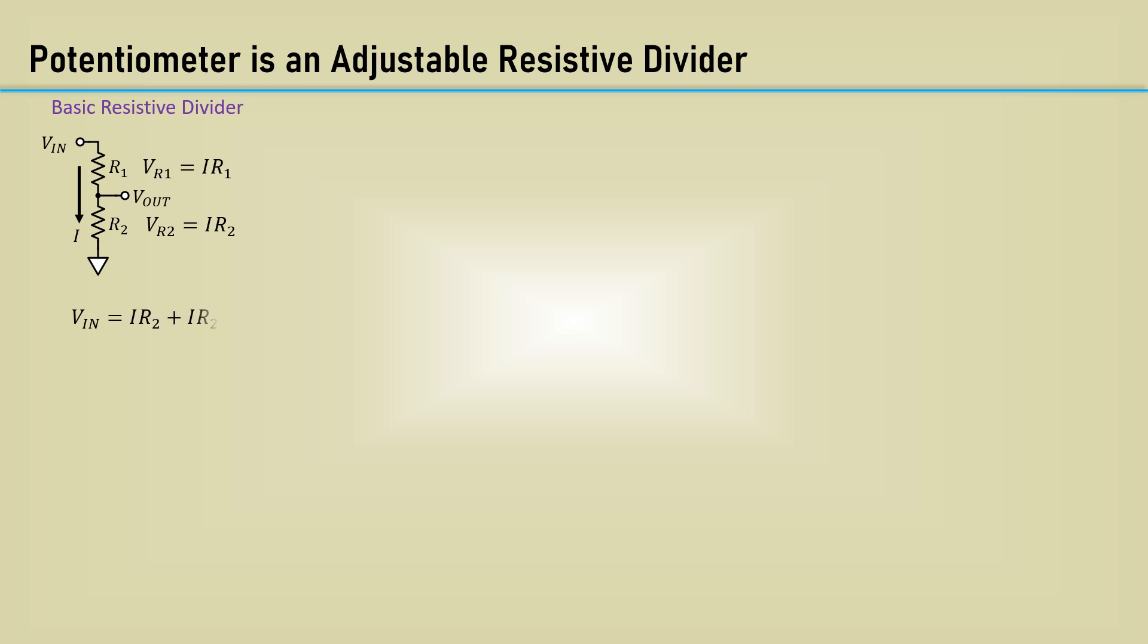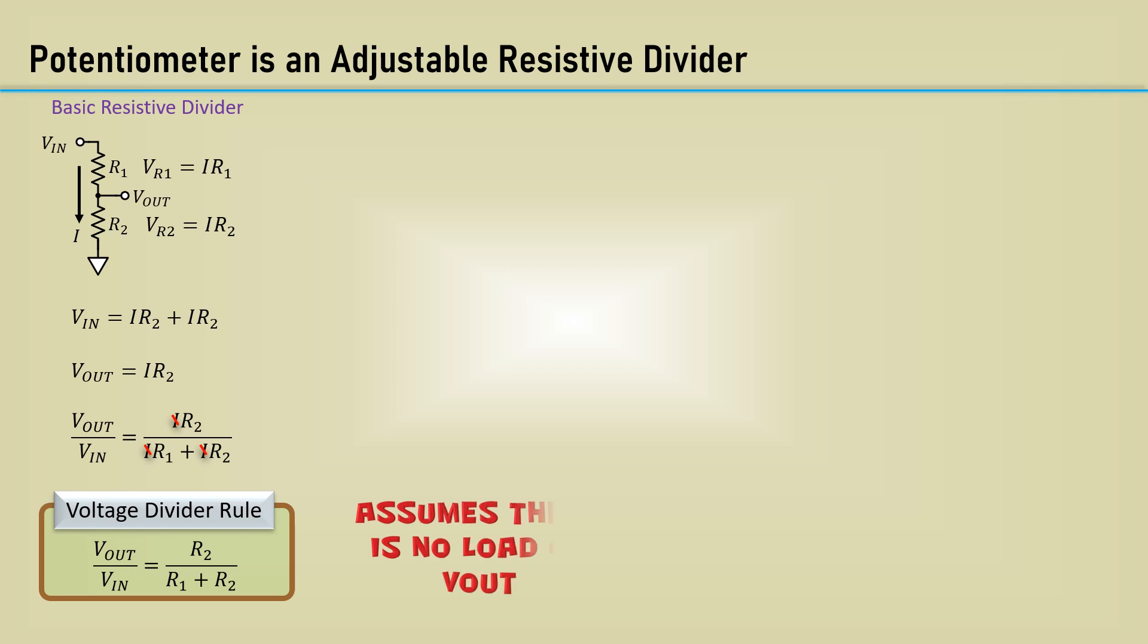The input voltage is the sum of those voltages, and Vout is the voltage across R2. We can then write the equation in terms of Vout over VIN as IR2 over IR1 plus IR2. The I's fall out, and we are left with R2 over R1 plus R2. This is the fundamental voltage divider equation. This assumes there is no load on Vout.